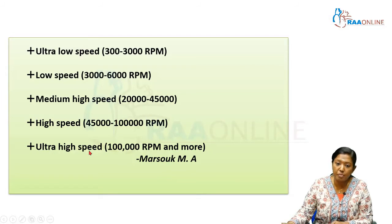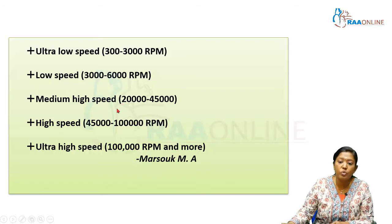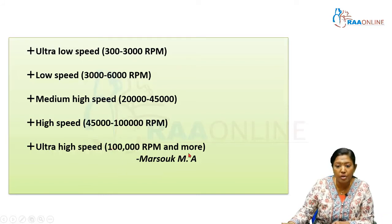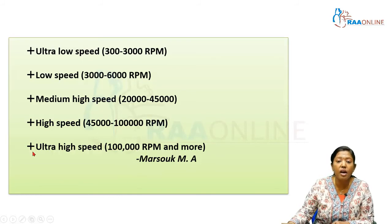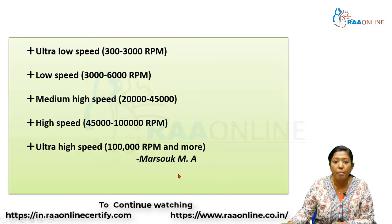Another classification is from the Textbook of Operative Dentistry by Marzouk. It categorizes speeds as: ultra-low speed at 300 to 3,000 RPM; low speed at 3,000 to 6,000 RPM; medium speed at 20,000 to 45,000 RPM; high speed at about 100,000 RPM or more; and ultra-high speed greater than 100,000 RPM, which is what we currently use for patients.